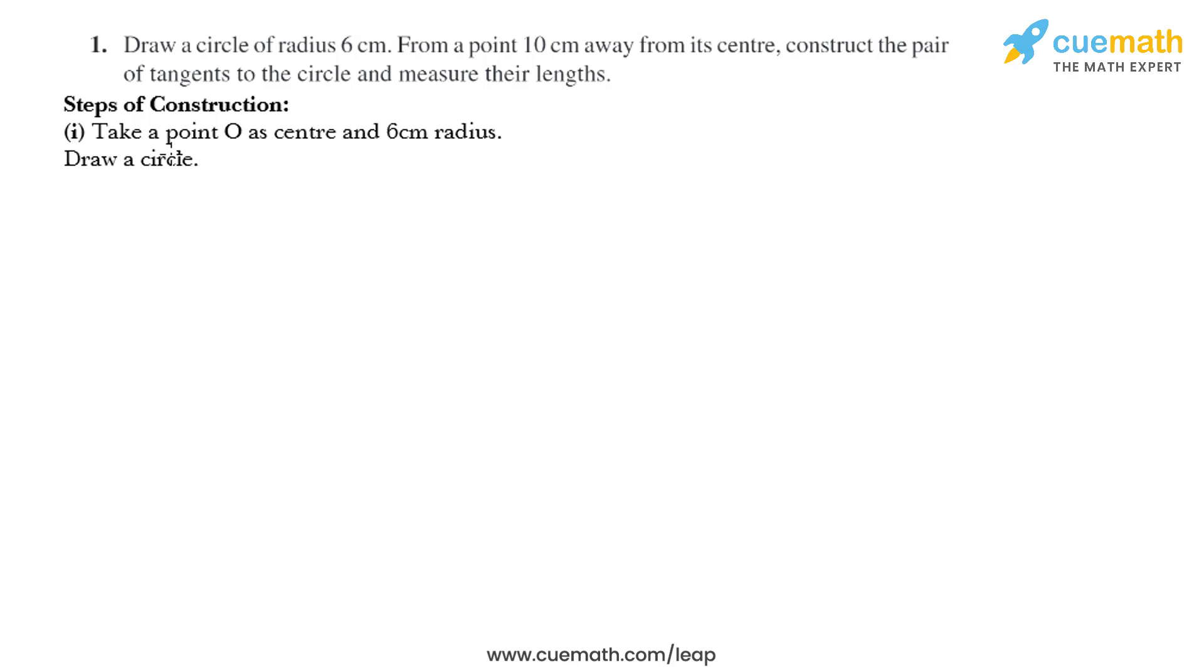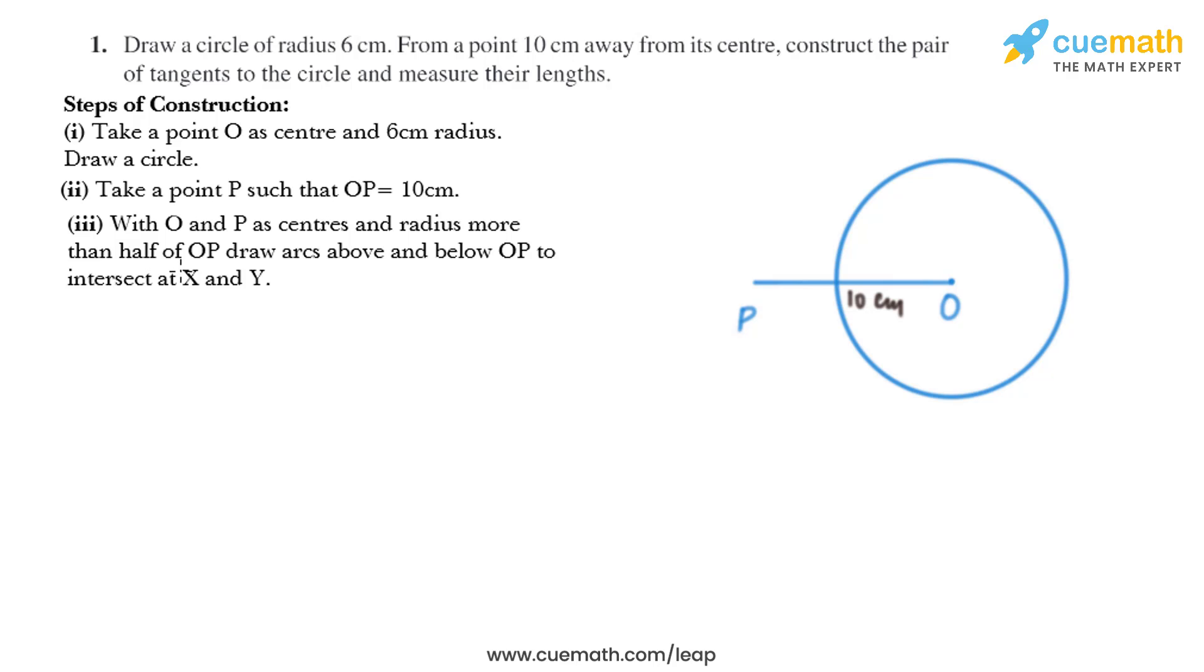Take a point O as center and 6 centimeter radius, draw a circle. So we will draw a circle with radius 6 centimeter. Now in the next step, take point P such that OP equals 10 centimeter.